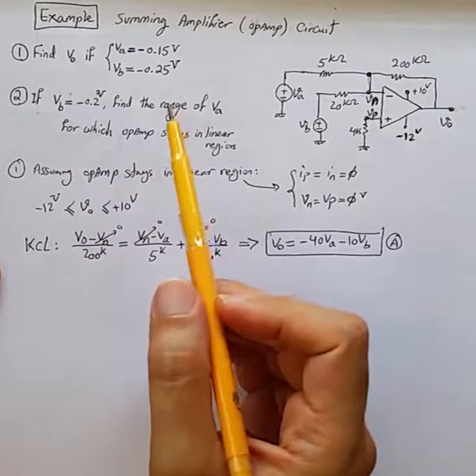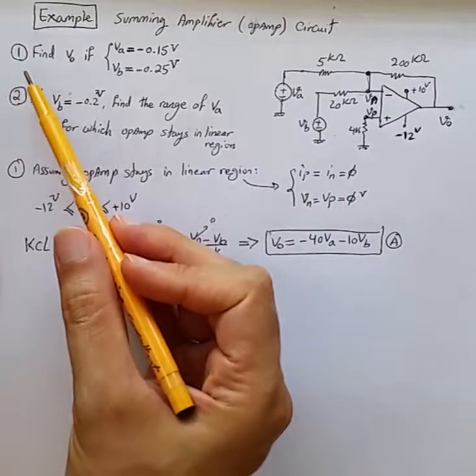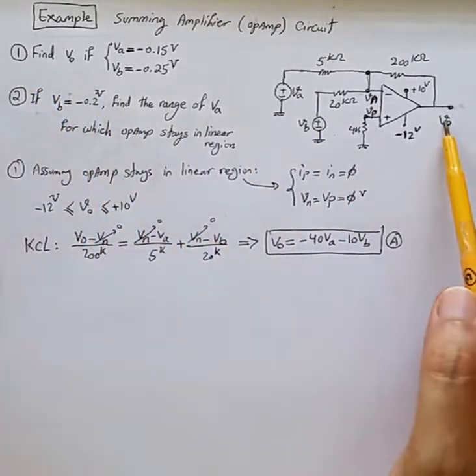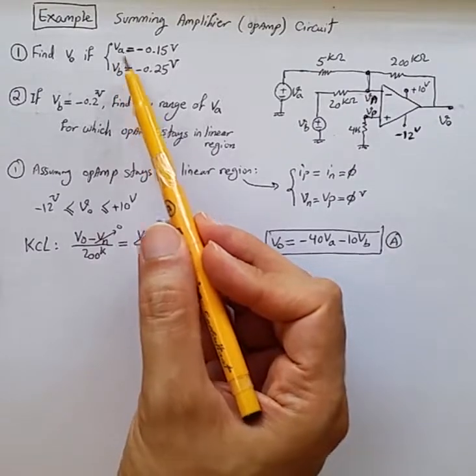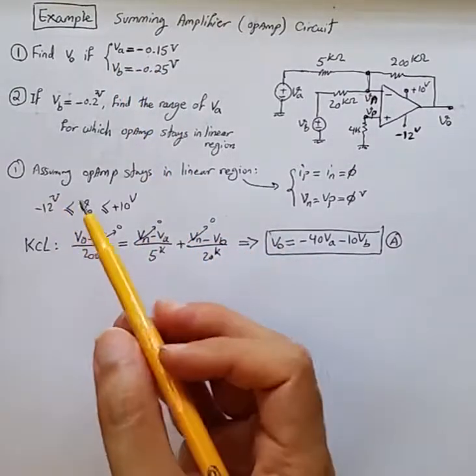Here is an example of a summing amplifier op-amp circuit. Part 1: we want to find out the value of Vout if the input voltages are given Va and Vb.